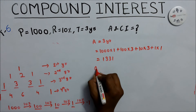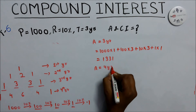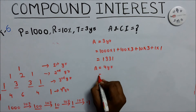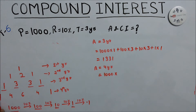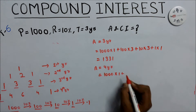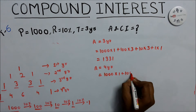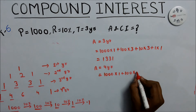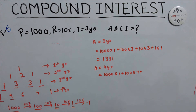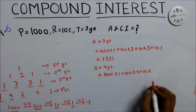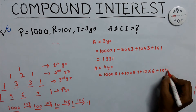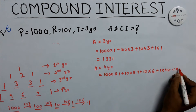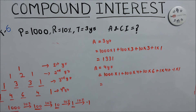For amount for 4 years, we repeat the same steps using the 4th row coefficients: 1000 into 1, plus 100 into 4, plus 10 into 6, plus 1 into 4, plus 0.1 into 1. This gives your amount for 4 years.